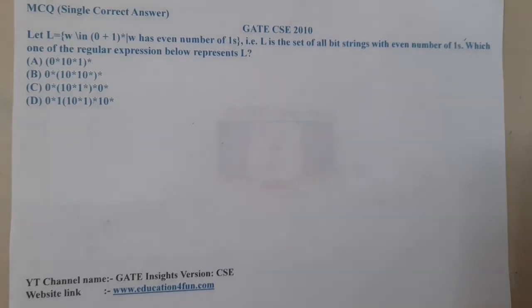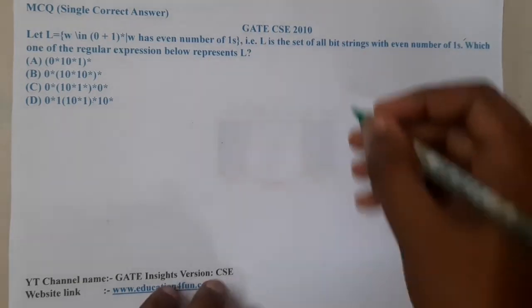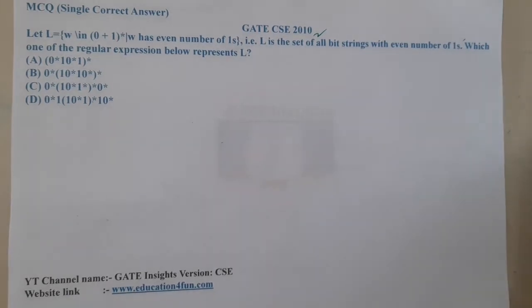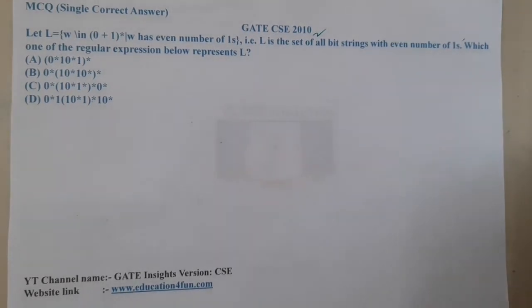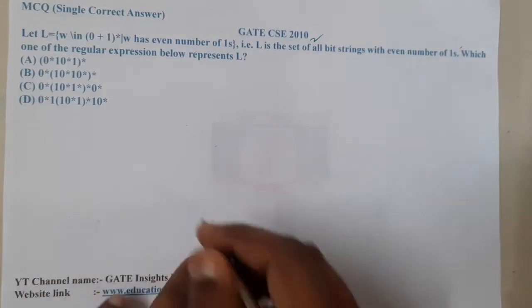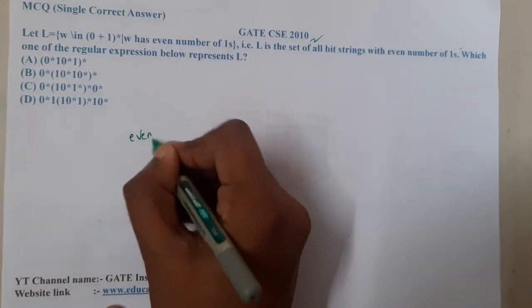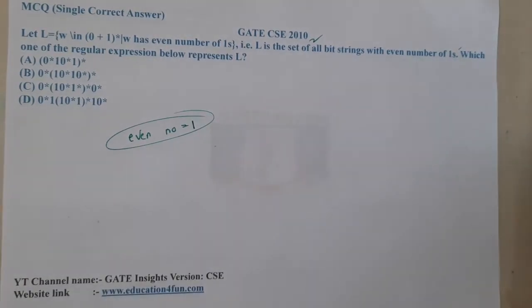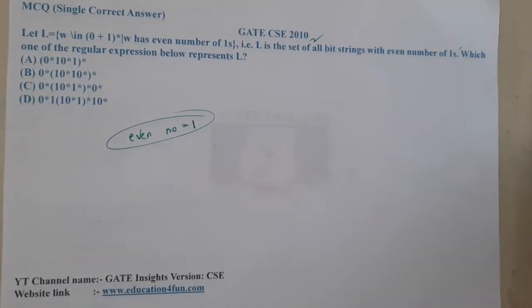Hello guys, we are back with our next lecture. This question belongs to GATE CSE 2010. The given question is: let L equals w in (0+1)* such that w has even number of 1s. So the only condition is even number of ones. L is the set of all bit strings with even number of ones.